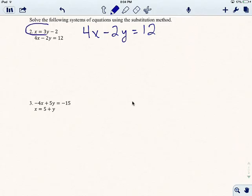I'm just going to rewrite. So the other equation, the one that's not in x equals or y equals format, I'm just going to rewrite that. And that's a great way to start, just rewrite that other equation. So I've got 4x minus 2y equals 12. All right, now if we look at this first equation, it says that x equals 3y minus 2.